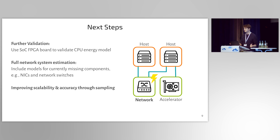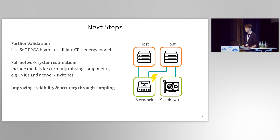These results look really promising. However, there's a lot of stuff I still want to look into. First, I'd like to do further validation, especially for the CPU energy model, which we haven't looked at so far. Second, the longer-term goal is to enable full network system estimation, mainly incorporating additional energy models — for example, for smart NICs or for programmable network switches. Third, and this is actually a short-term goal, is to improve the scalability and accuracy of ACDSim by sampling the workload information.